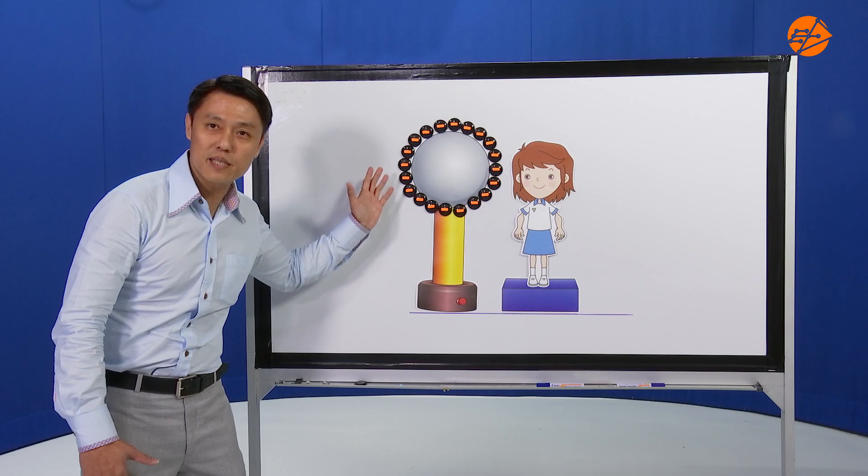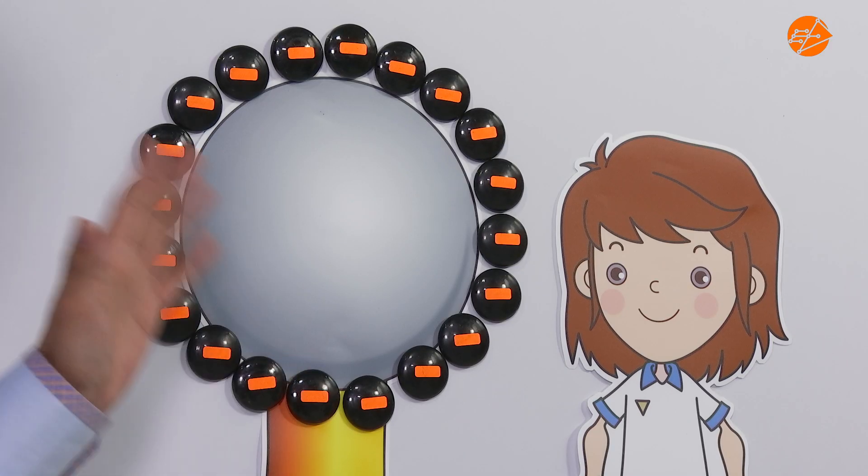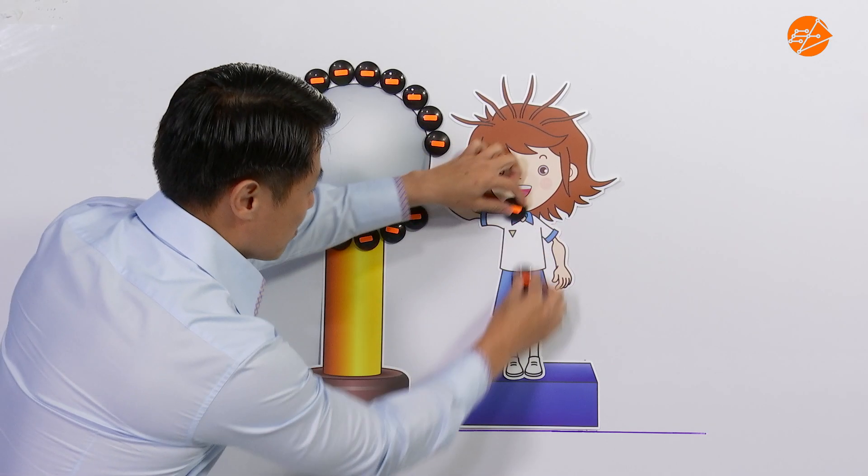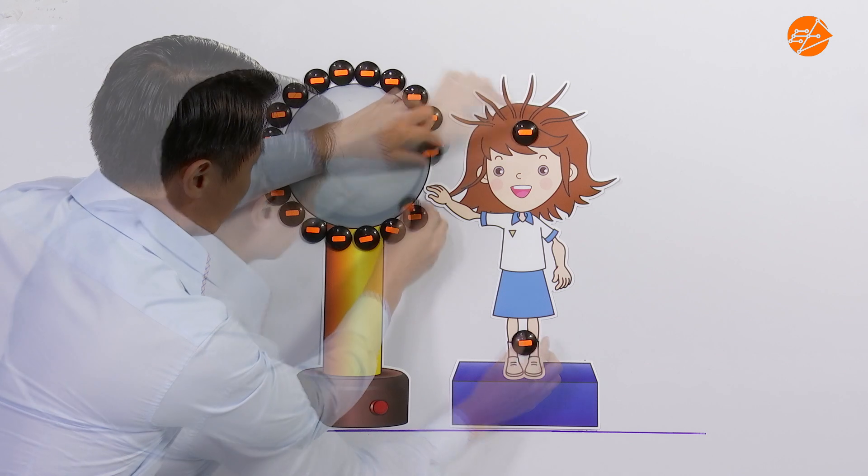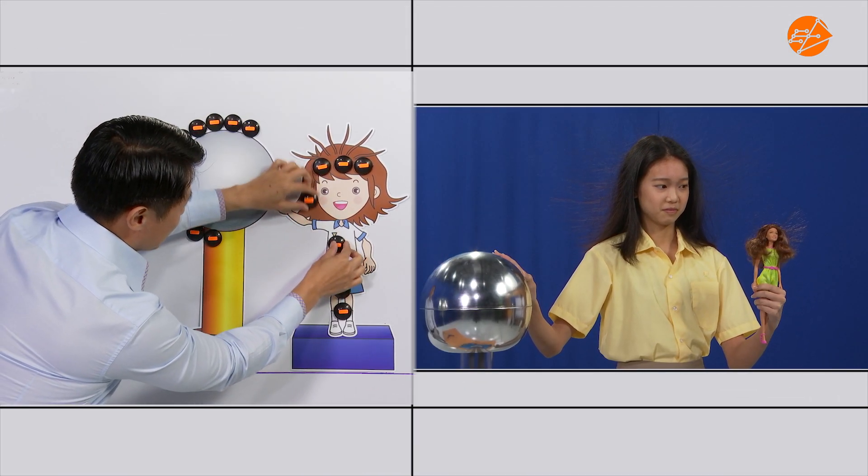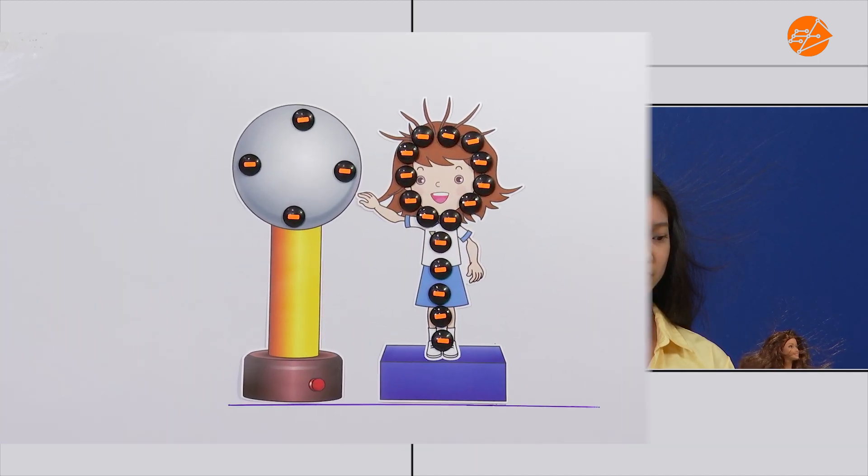This graphic represents the original charge distribution of the Van de Graaff generator when it is negatively charged. When she touches the dome, the electrons are transferred from the dome to her due to the electrostatic force of repulsion. This causes her body to become negatively charged.